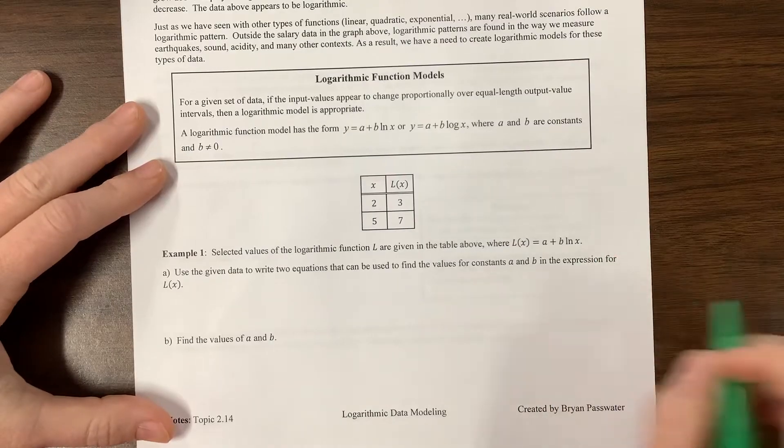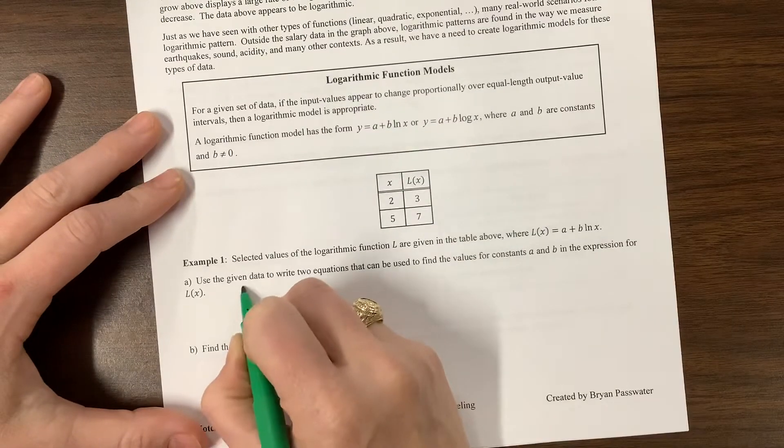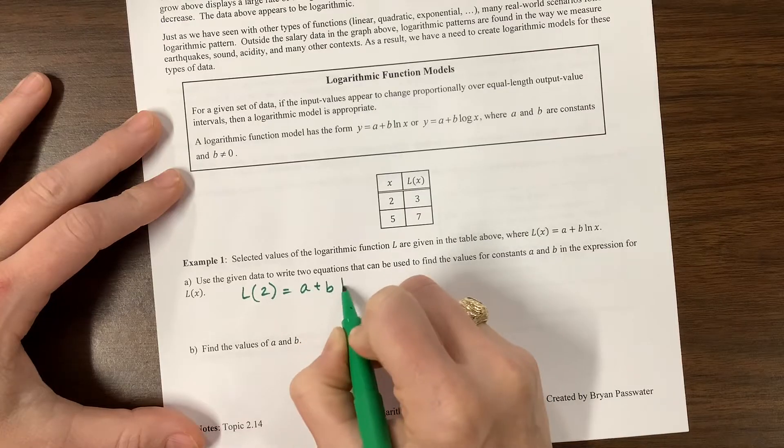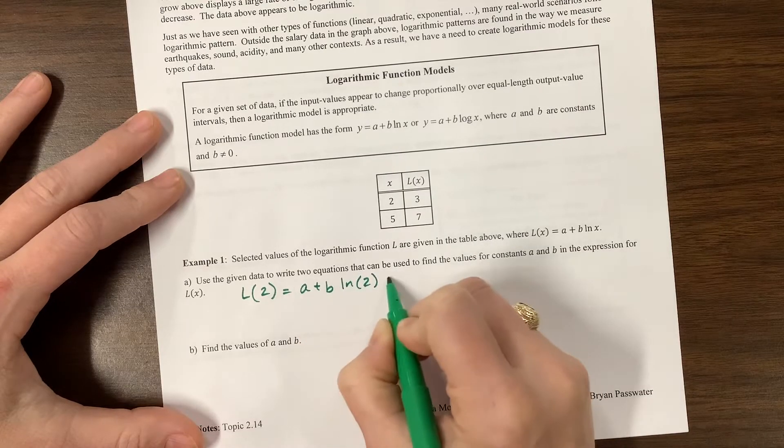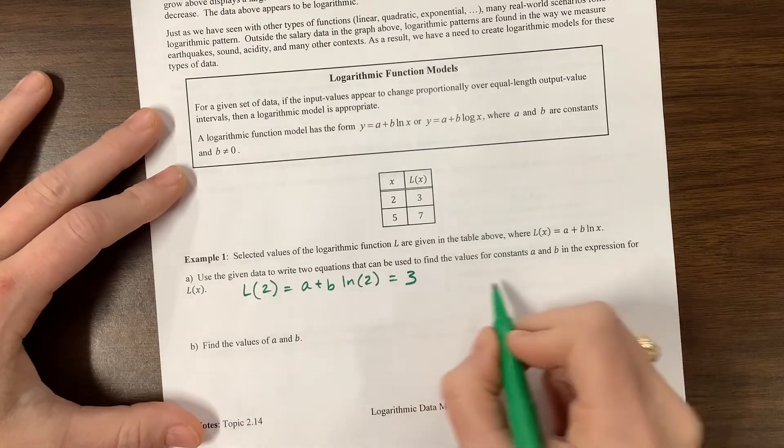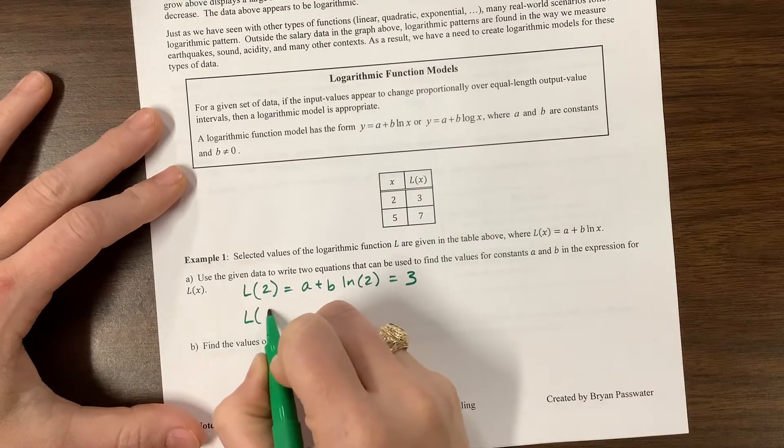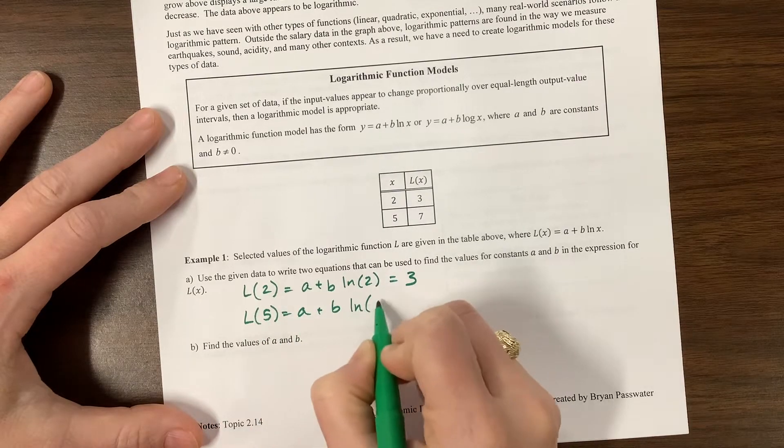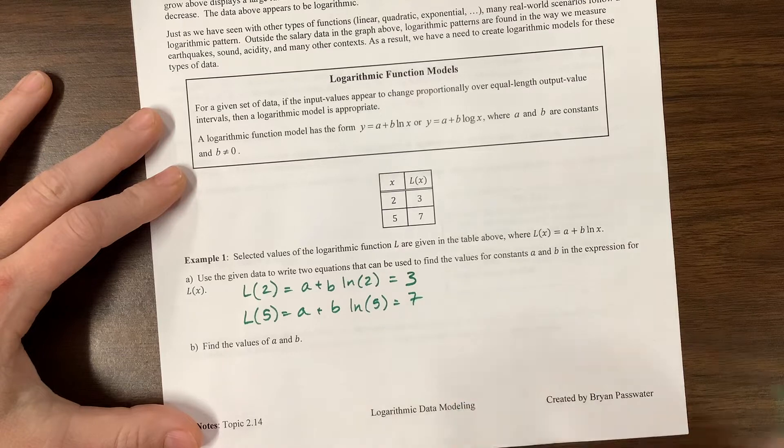We know that L(2) would be equal to A plus B times the natural log of 2, and this is equal to 3. And then we also know that L(5) means that A plus B times the natural log of 5 is equal to 7.